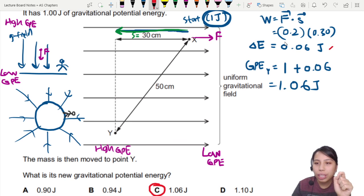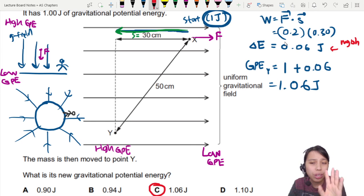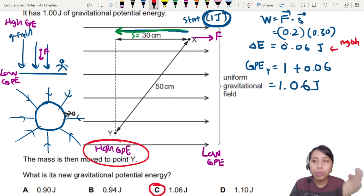Once again, a quick reminder. If you use the MG Delta H method, you will get 0.06 for the 30 cm change. But that's not the final answer. You want the final GPE up there. So make sure you read the question. Think a little bit carefully. Where is low GPE to high? And you'll be okay. All right. So that's all for this video. I'll see you in the next one.